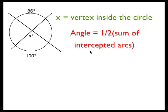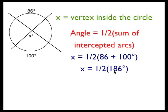Since 86 and 100 are the intercepted arcs, angle X will equal half of 86 plus 100. That's a subtotal of 186 and half of 186 is 93 degrees.